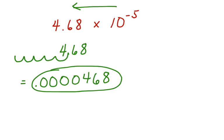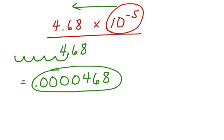Just to review: if you have a positive exponent, then you're going to move your decimal point to the right. If you have a negative exponent, you're going to move your decimal point to the left. This is how we can take an expression in scientific notation and write it as a value. Thank you.